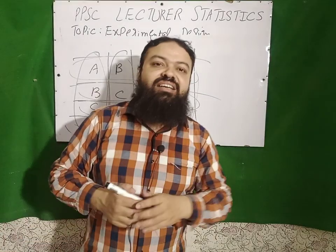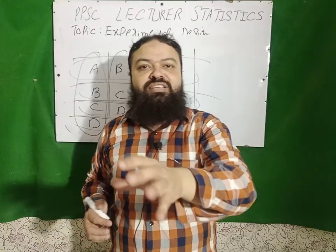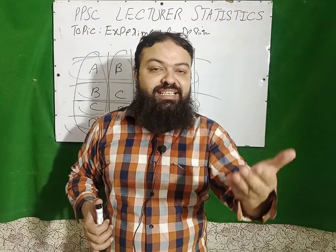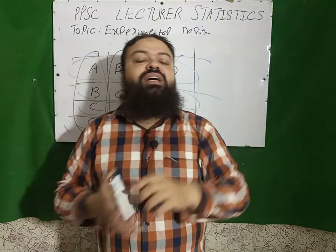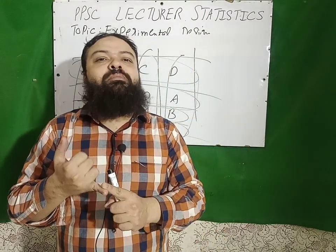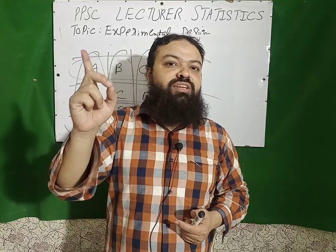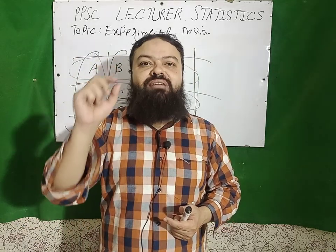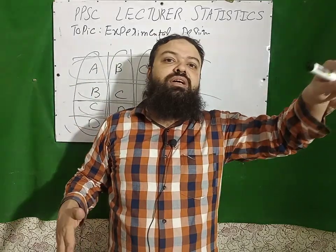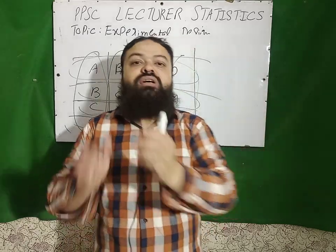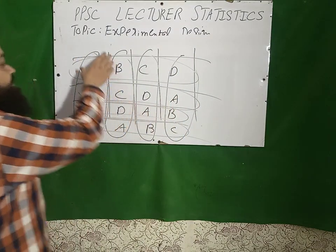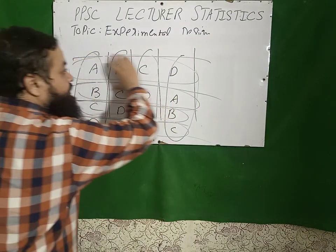In CR design we apply the treatment randomly on the experimental units. There is no restriction and treatment can be applied, repeated any number of times in column as well as row. Then we discuss RCBD. In RCBD we make the blocks, we control one source of variation. Every treatment must be applied in every block and we are not considering the column or the row. The repetition of the treatment can be done in the row. But in Latin square design there is no repetition of the treatment in column as well as row.